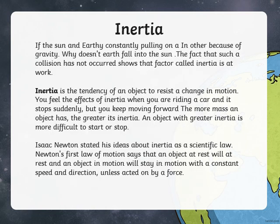This week we are going to mainly focus on gravity and orbits, and start talking about inertia. Inertia is the tendency of an object to resist a change in motion. Let's think about it this way: why doesn't Earth fall into the sun? How do the planets in the solar system keep revolving without actually falling?